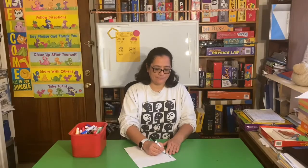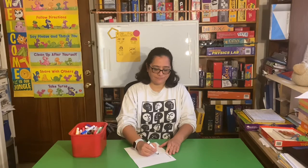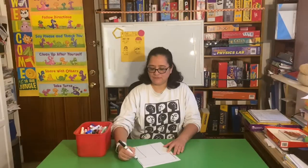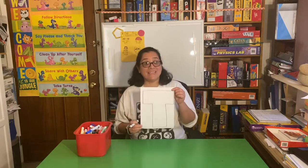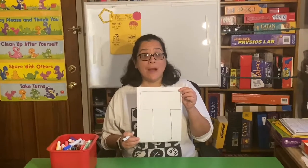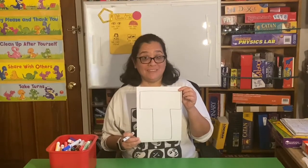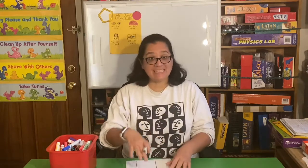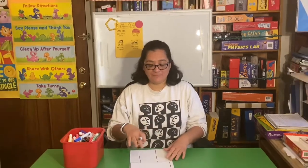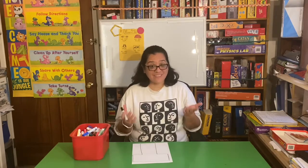Here we go. This is my big capital bubble letter T. Now, inside of my bubble letter T, I'm going to draw some things that start with the letter T.